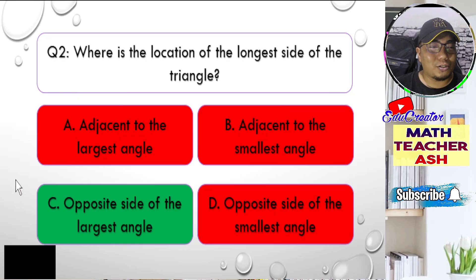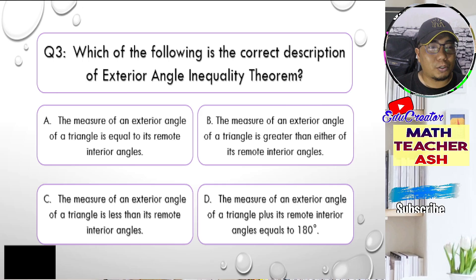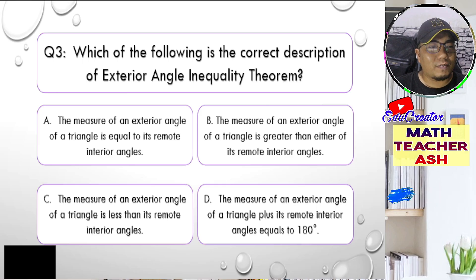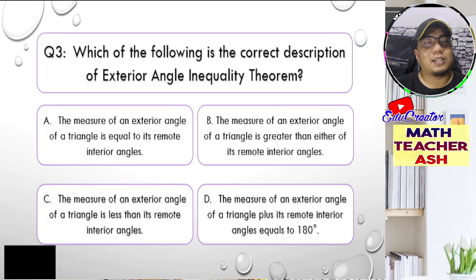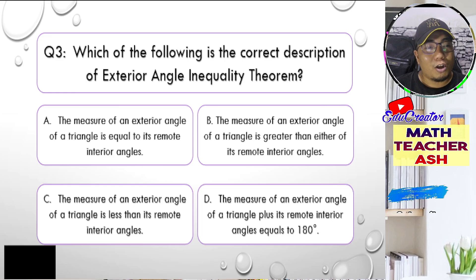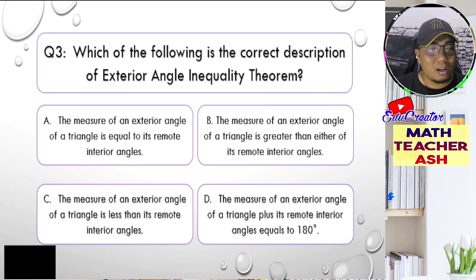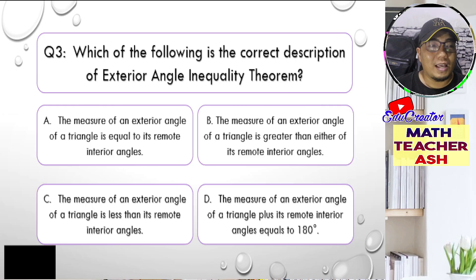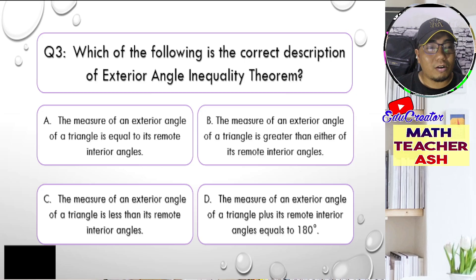Let us go to question number three. Which of the following is the correct description of the exterior angle inequality theorem? Is it A, the measure of an exterior angle of a triangle is equal to its remote interior angles; B, greater than either of its remote interior angles; C, less than its remote interior angles; or D, the exterior angle plus its remote interior angles equals 180 degrees? I'll give you five seconds to think about your answer.